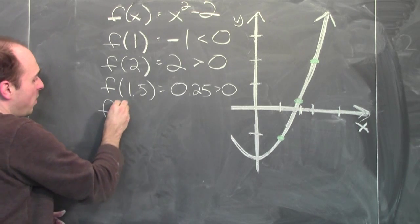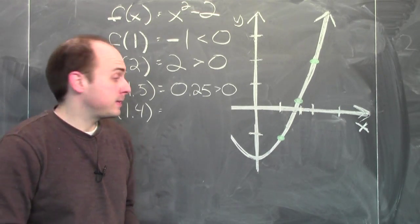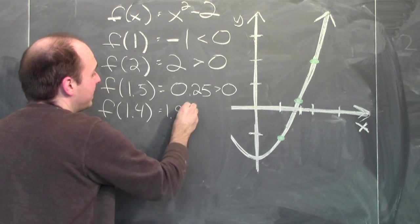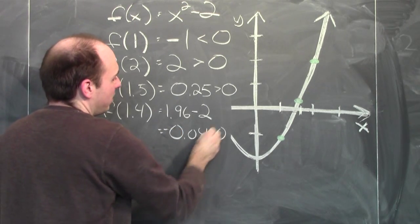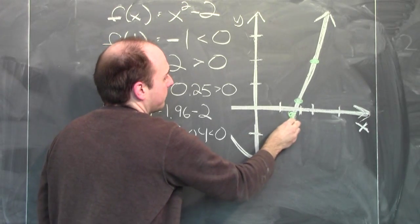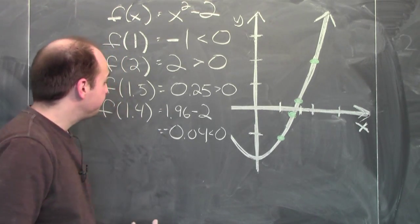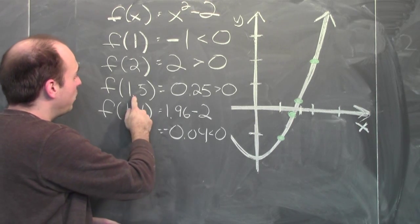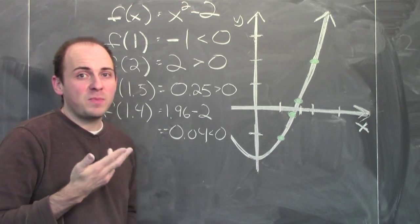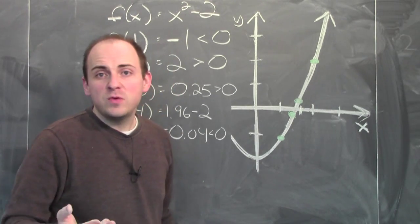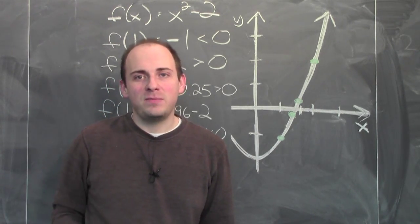I can do even better — let's pick 1.4. If I plug in 1.4, well, 14 squared is 196, so 1.4 squared is 1.96, minus 2 gives negative 0.04. It's just barely below the x-axis. Now I know that the square root of 2, the positive input that makes this function equal to 0, must be between 1.4 and 1.5. We could do this with a few calculations on the blackboard — let's bring out a computation device to get an even better approximation.